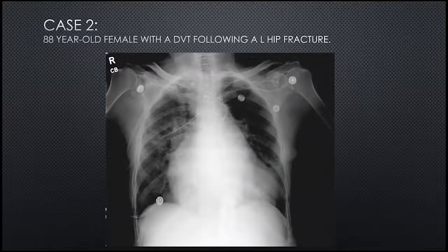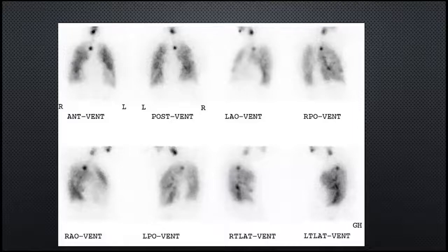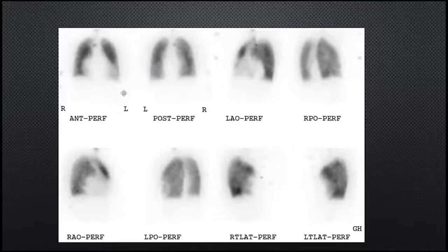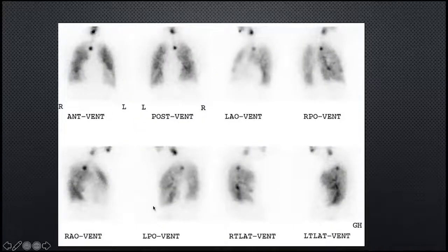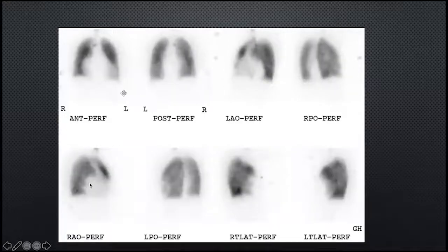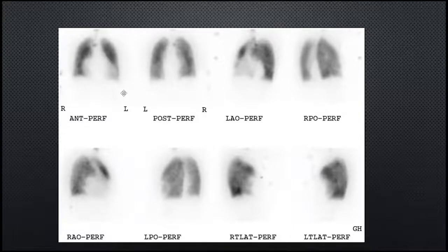Case 2: an 88-year-old female with DVT following a hip fracture. Her chest radiograph shows an enlarged heart. Ventilation shows a little central clumping and a few ventilation defects at the lung bases. The perfusion matches well with the ventilation, including a scalloped appearance at the right heart border also seen on perfusion. Everything is matched, and cardiomegaly counts as a non-segmental defect. This is a very low probability — or low probability by standard PIOPED criteria — for PE because all defects are non-segmental.